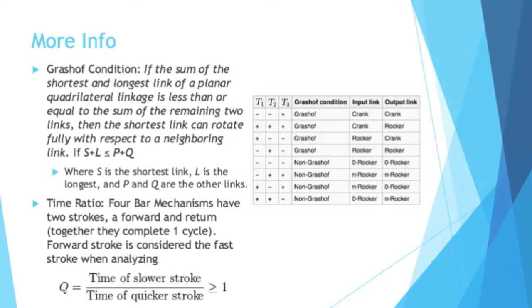But it's not just the general motions that are important. It's also the actual measurements and the time it takes for these things to occur. Four bar mechanisms have two strokes, a forward stroke and a return stroke. Together they complete one cycle. The Q ratio is the time of the slower stroke over the time of the quicker stroke. And that has to be greater than or equal to one.